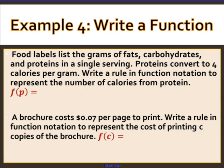Word problem: Food labels list grams of fat, carbohydrates, and proteins. Proteins convert to four calories per gram. Write a rule in function notation for the number of calories from protein. The function of p equals 4p, where p is the number of grams of protein and f(p) gives the calories from protein.